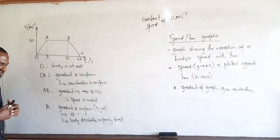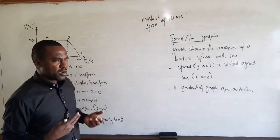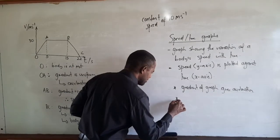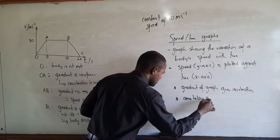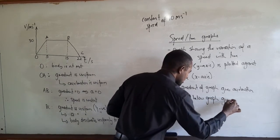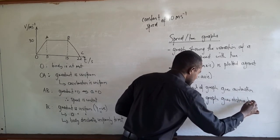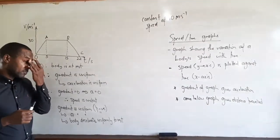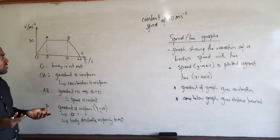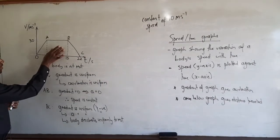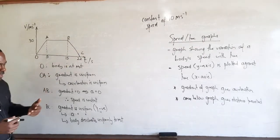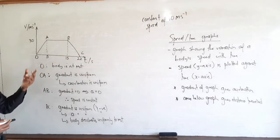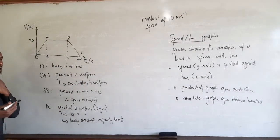Now, since we have numbers, let's consider the area under the graph. For a speed-time graph, the area below the graph gives the distance travelled. To calculate the area, we can find the area of each segment — a triangle for OA, a rectangle for AB, and a triangle for BC — and add them up. We can also recognize the overall shape as a trapezium and use the trapezium area formula.